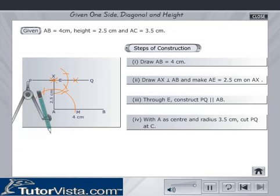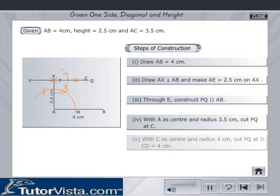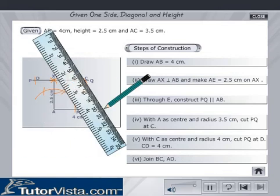With A as center and radius 3.5 cm, cut PQ at C. With C as center and radius 4 cm, cut PQ at D. This gives CD is equal to 4 cm. Join BC and AD.